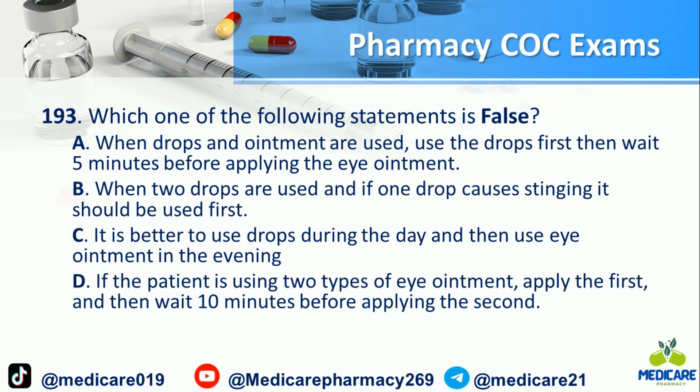Number 193: Which one of the following statements is false? A) When drops and ointments are used, use the drops first then wait 5 minutes before applying the eye ointments. B) When two drops are used and one drop causes stinging, it should be used first. C) It is better to use drops during the day, then use eye ointments in the evening. D) If the patient is using two types of eye ointments, apply the first and then wait 10 minutes before applying the second. The answer is B.